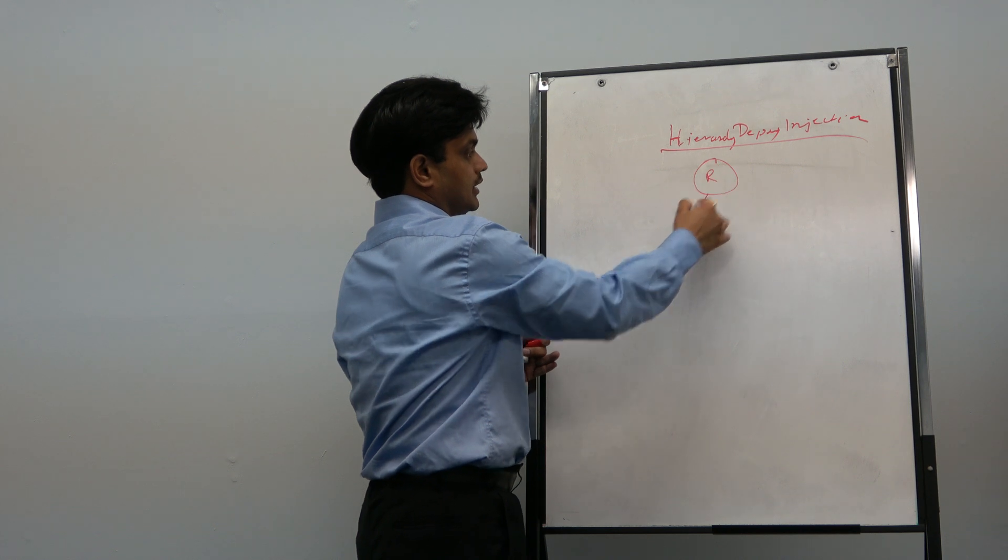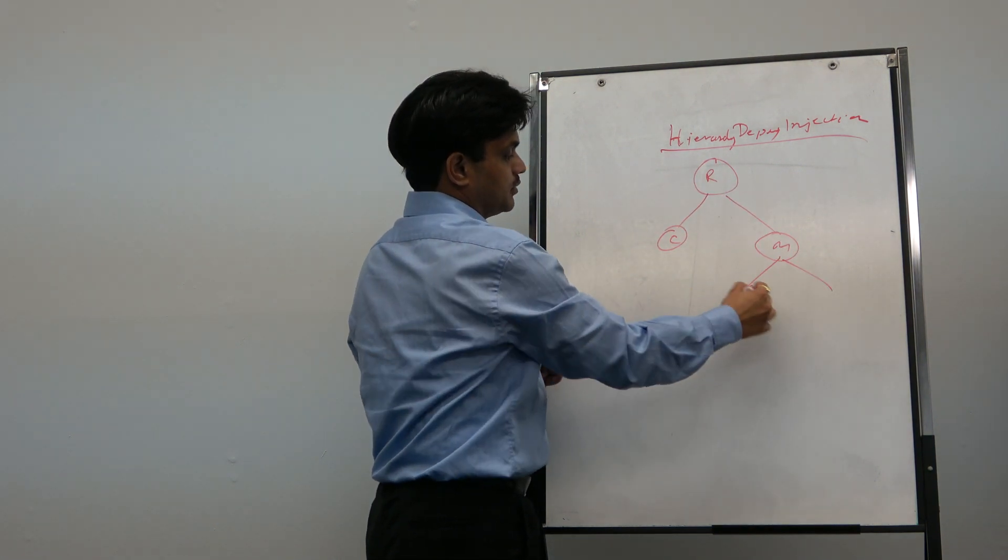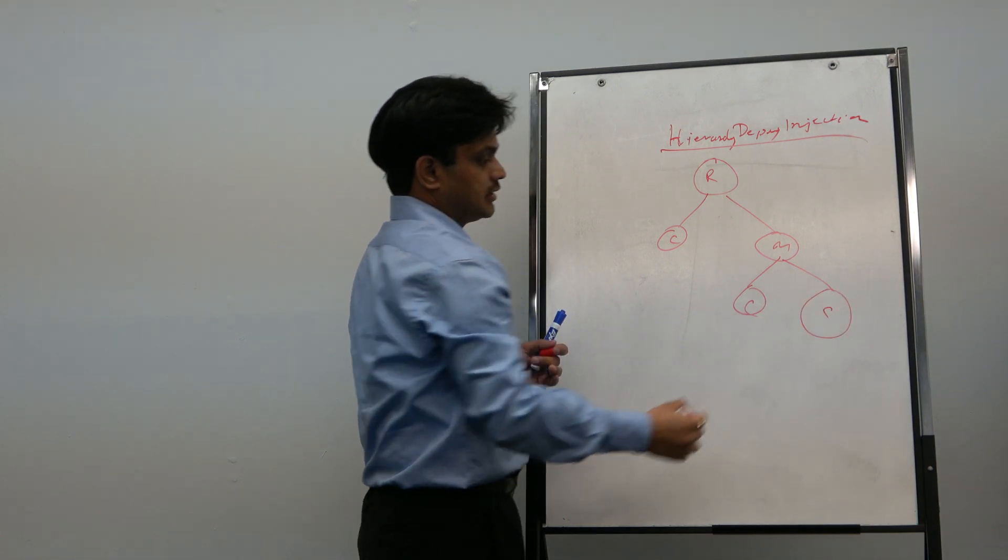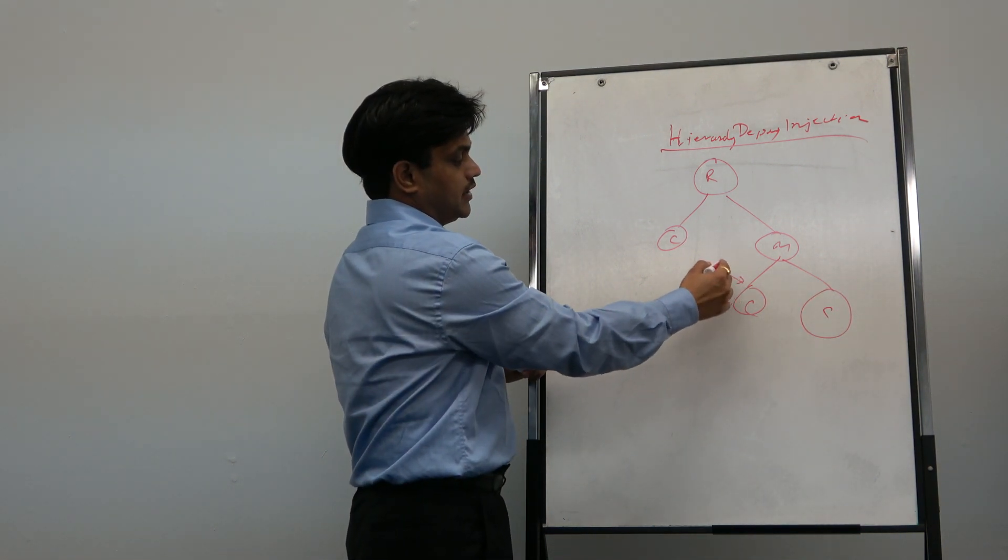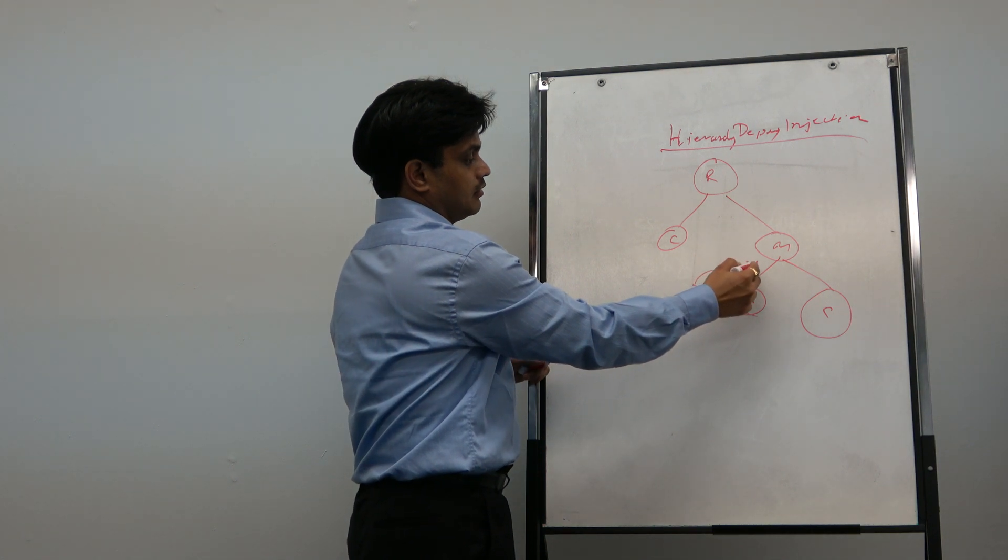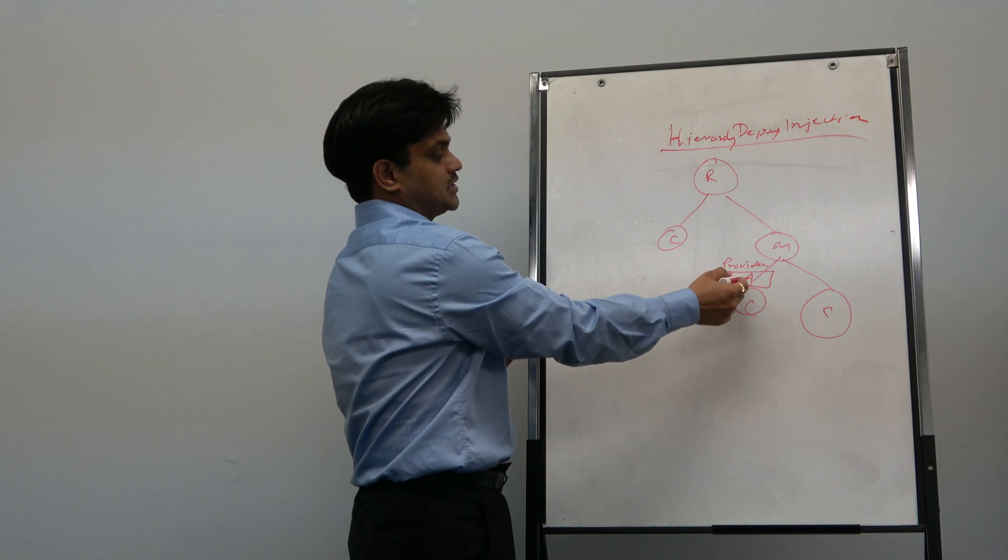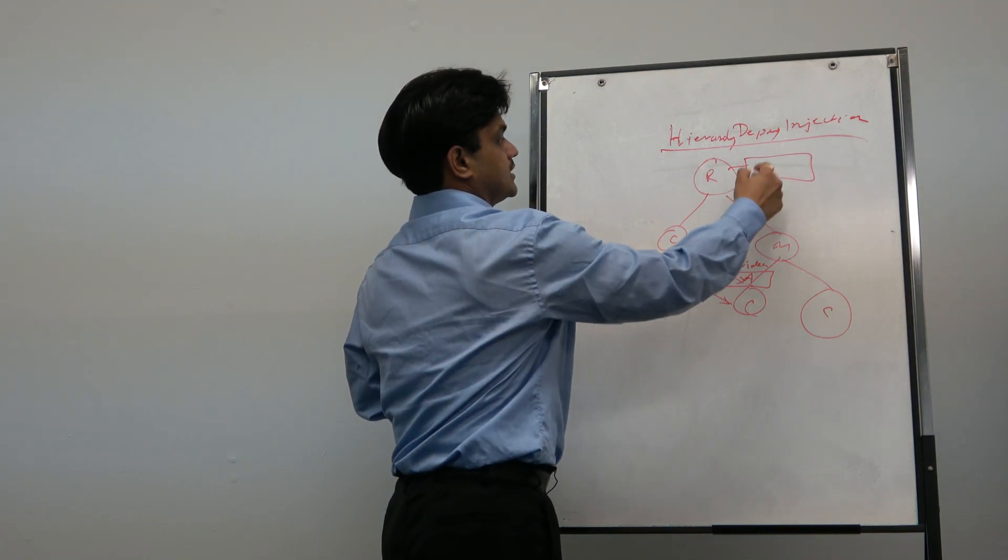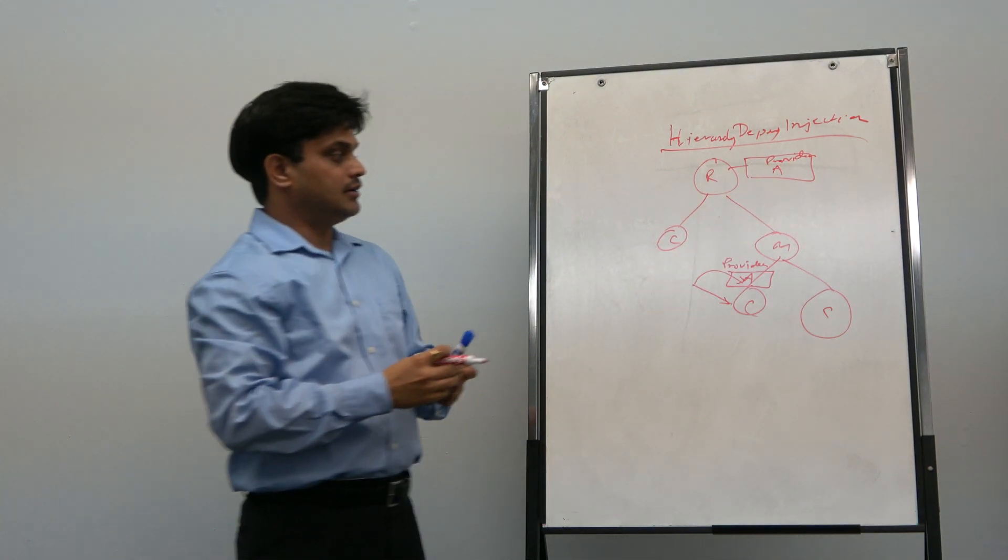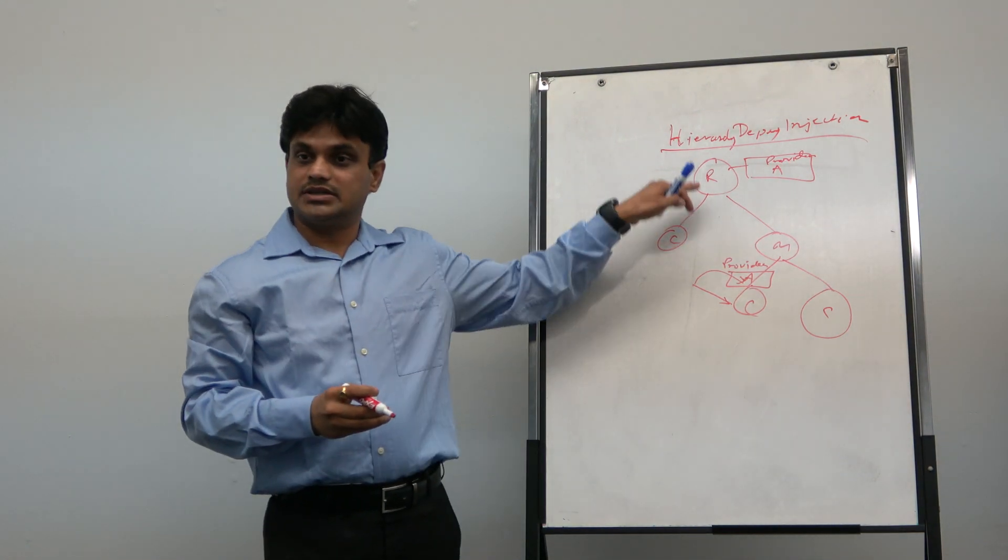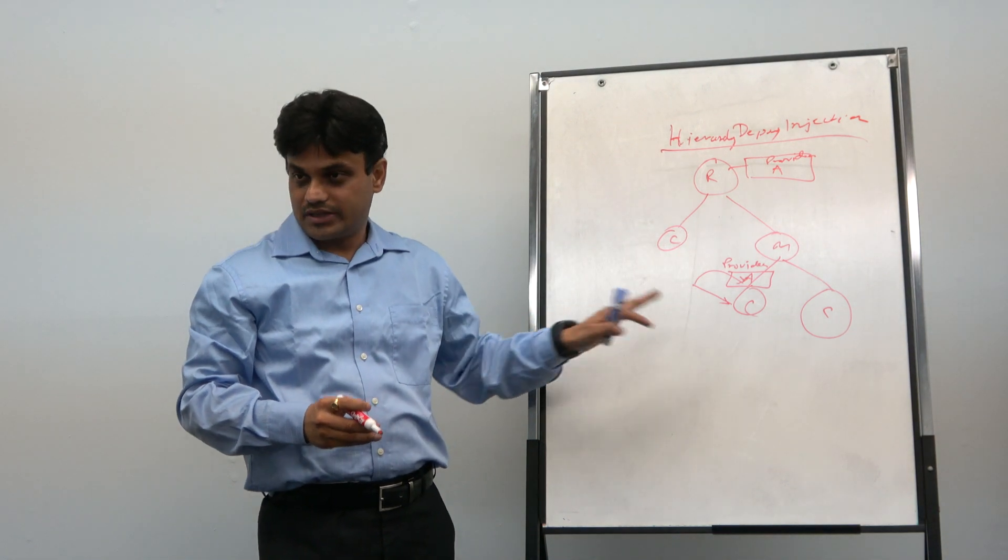There is a root, and then there are components, then there is module again, and there are a few more components. At this level, if you want to inject something, you can provide a provider over here for a service A, and the same service A is provided over here also. Then you will have two different instances of the service A. This is called hierarchical dependency injection.